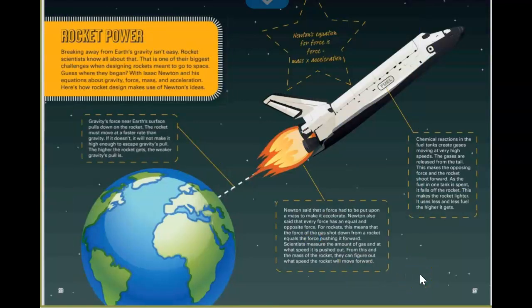Rocket power. Breaking away from Earth's gravity isn't easy. And rocket scientists know all about that. This is one of their biggest challenges when designing rockets meant to go to space. Guess where they begin? With Isaac Newton and his equation about gravity, force and mass and acceleration. And here's how rocket designs help use Isaac's ideas. So you see here is explanations of rocket power. Mrs. Pluto is going to stop here and you are going to be logging on to Epic. And you're going to be reading the rest of the story about forces and motion through infographics. And then taking a quiz at the end.